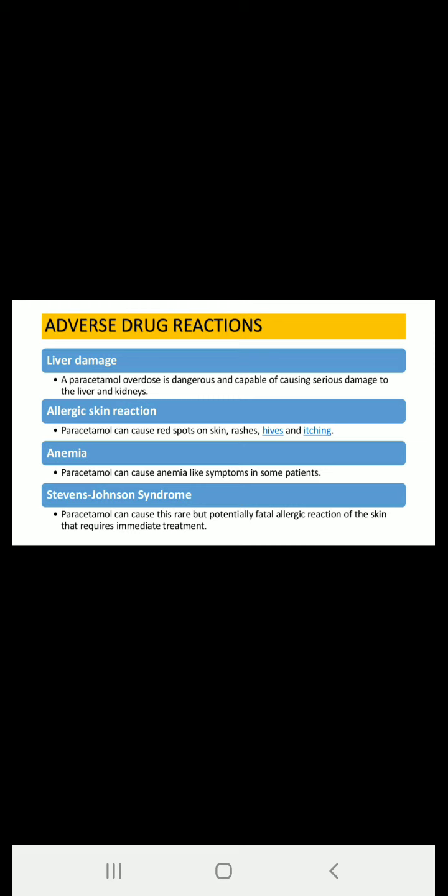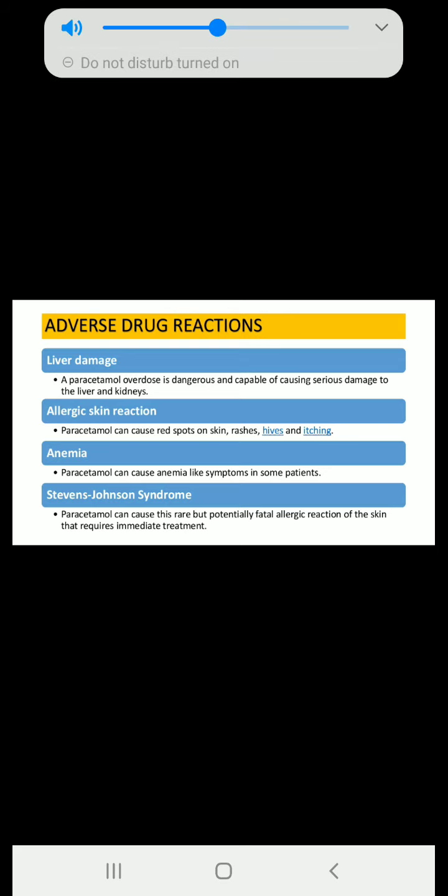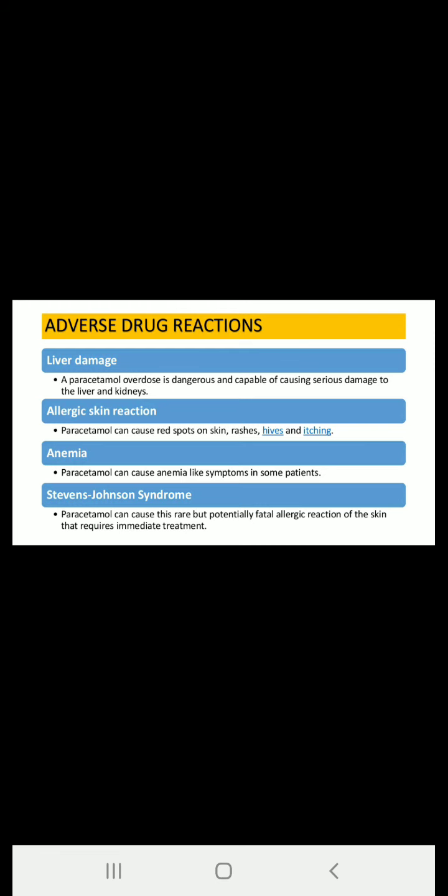Next is allergic skin reactions. Paracetamol can cause red spots on skin, rashes, hives, or itching after its administration in overdosage. The next adverse drug reaction is anemia: paracetamol can cause anemia-like symptoms in some patients, such as reduced oxygen-carrying capacity, breathing problems, and vertigo.